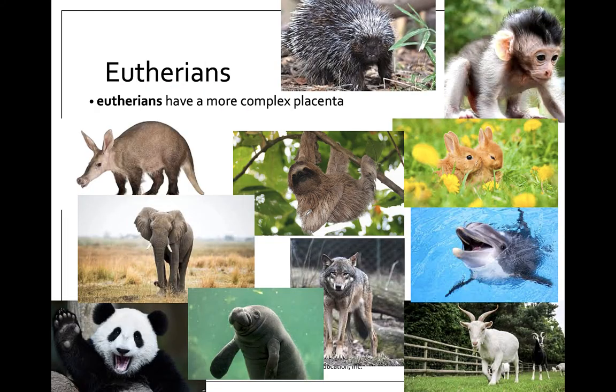The last group of mammals are the eutherians. EU means true, and these are going to have a more complete placenta and more complete embryonic development. Many of these organisms are born with the ability to stand up, walk around, and care for themselves, and then they continue to suckle and feed off of the mother using nipples and milk after birth. Humans and primates are typically born fairly early in development compared to things like deer, where they're born literally standing and able to run.